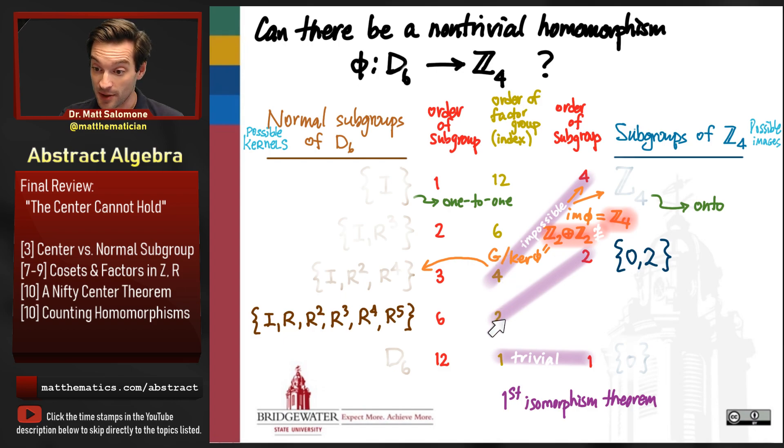So the only possibility is maybe we have a homomorphism whose image is the two-element subgroup 0, 2. And that one, again, does end up working because there's only one group up to isomorphism that has two elements. It's the cyclic group Z2. And so the image is going to be isomorphic to Z2. The factor group, because it has two elements, will also be isomorphic to Z2. And so this one seems to work.